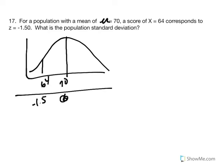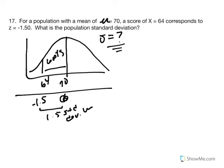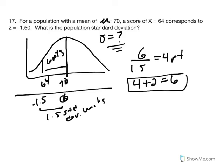What we want to find is what each standard deviation unit equals. The distance from 64 to 70 is 1.5 standard deviation units. The point difference is 70 minus 64, which is 6 points — the same as 1.5 standard deviation units. To find 1 standard deviation unit, we divide 6 points by 1.5, giving us 4 points.